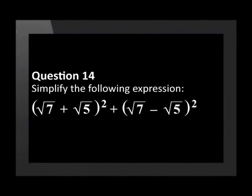Question 14. Simplify the following expression: in the first bracket, the square root of 7 plus the square root of 5, squared, plus in the second bracket, the square root of 7 minus the square root of 5, squared.